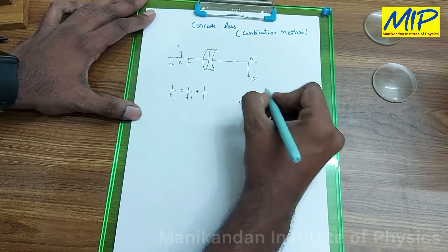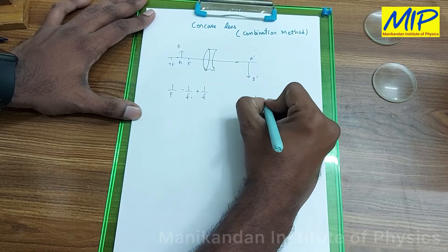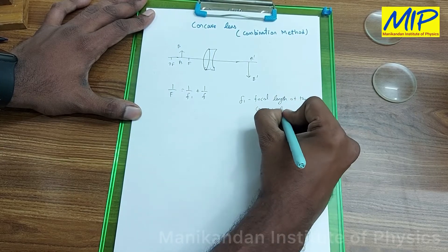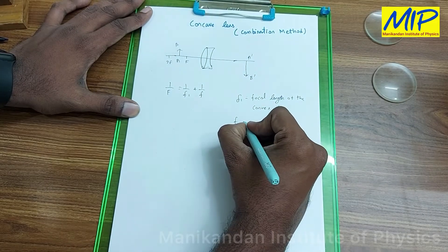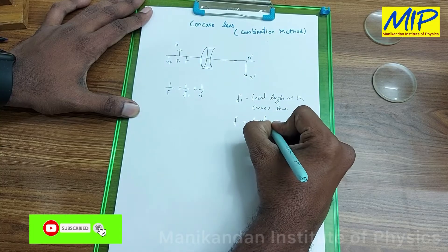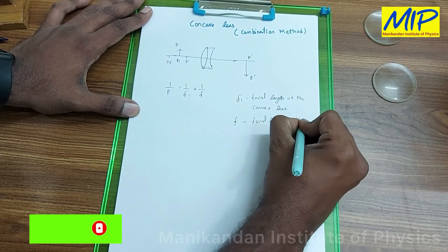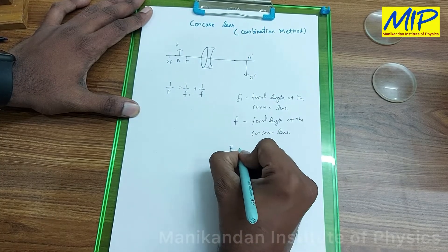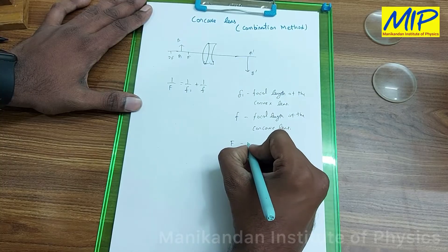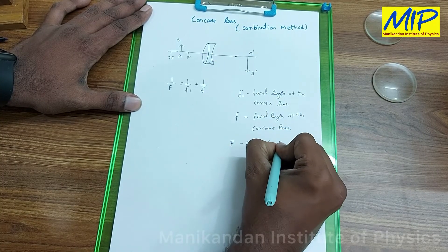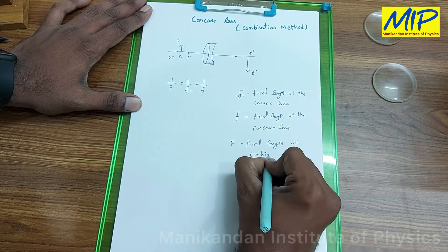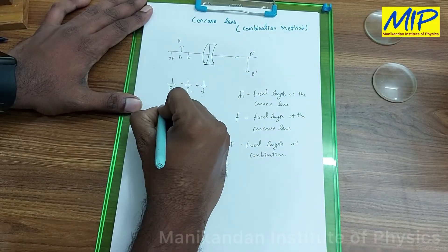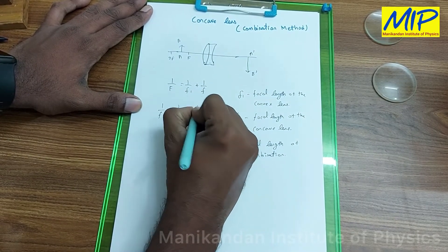So what is F1? F1 is the focal length of the convex lens, and small f is the focal length of the given concave lens. Capital F is the focal length of the combination. I just want to find this focal length of the concave lens, so I am going to write this equation: 1 over f equals 1 over F minus 1 over F1.